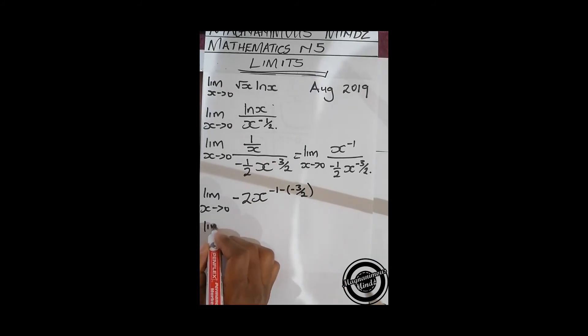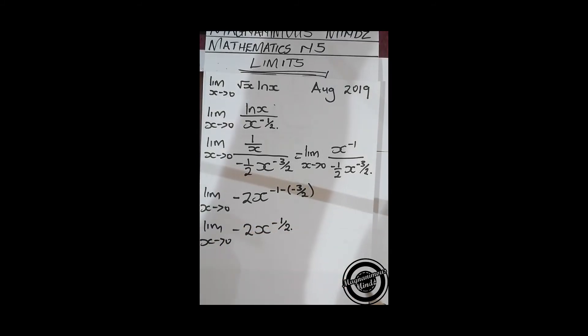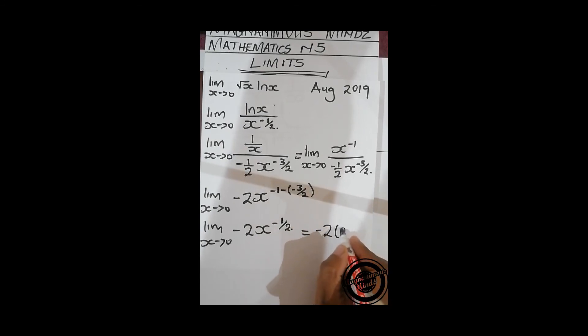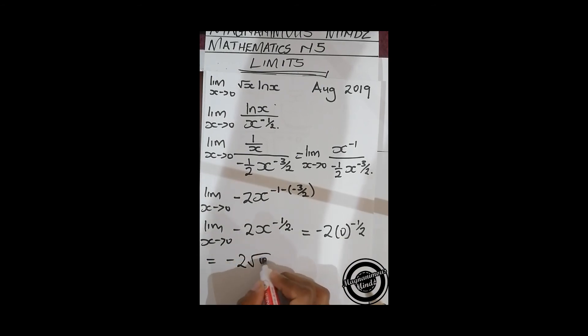This gives us lim x approaching zero of negative 2 times x to the power 1/2. Now we directly substitute because this is not going to give us anything undefined. So that's going to be negative 2 times 0 to the power 1/2, or negative 2 times square root of zero. This will give you zero.